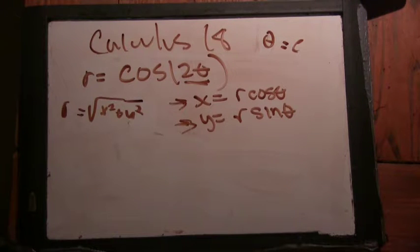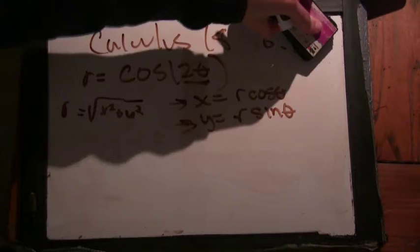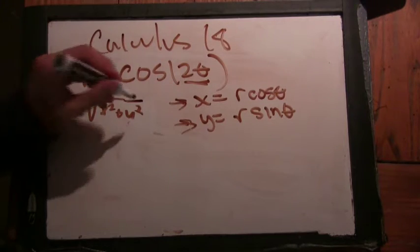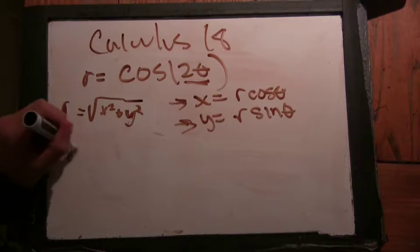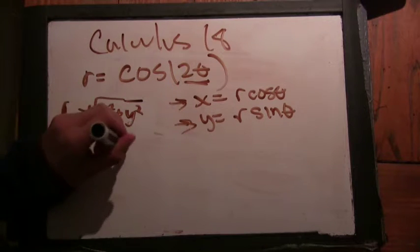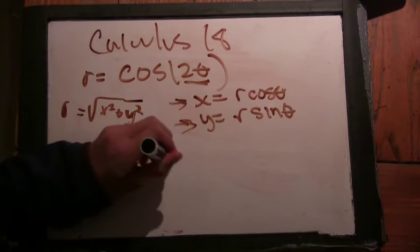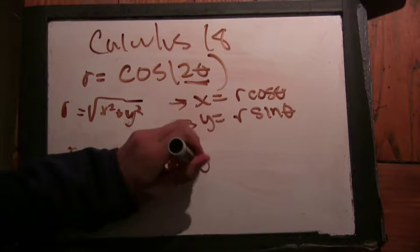So we could expand out cos(2θ). No, that's going to make things complicated still. What do you mean? Well, r equals cos²θ - sin²θ. Okay.